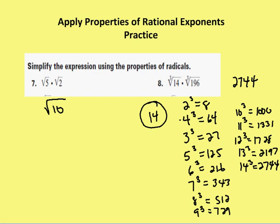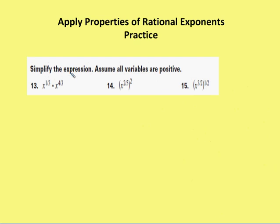Moving on: simplify the expression, assume all variables are positive. For x to the 1/3 times x to the 4/3, I use product of powers and add the exponents: x to the 1/3 plus 4/3 gives me x to the 5/3. Number 14 uses power of powers: multiplying 2 times 2/5 gives x to the 4/5. And again, power of powers: x to the 3/2 taken to the 1/2 gives me x to the 3/4.